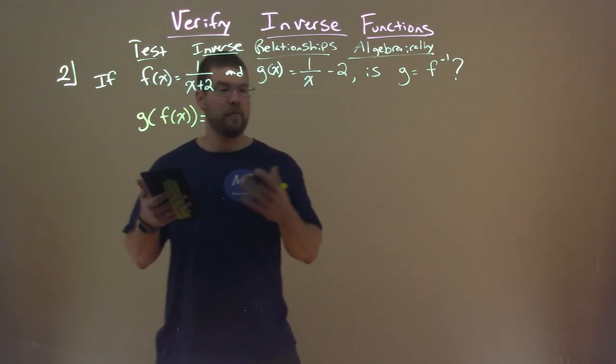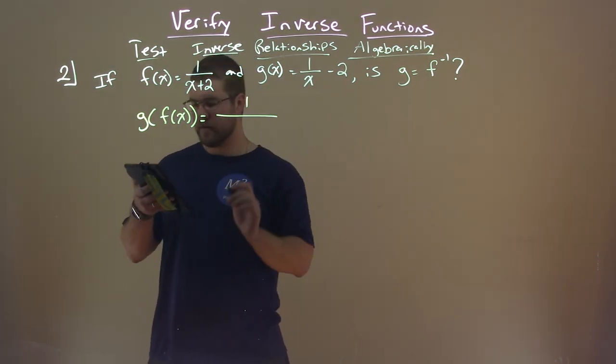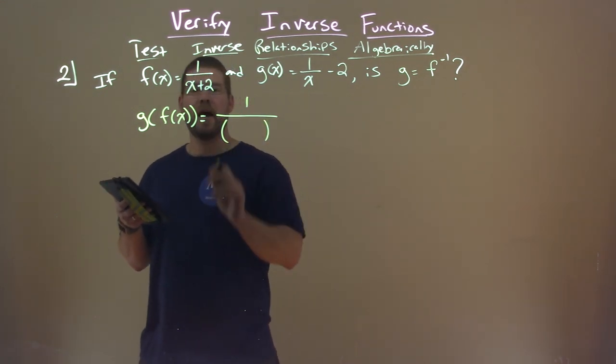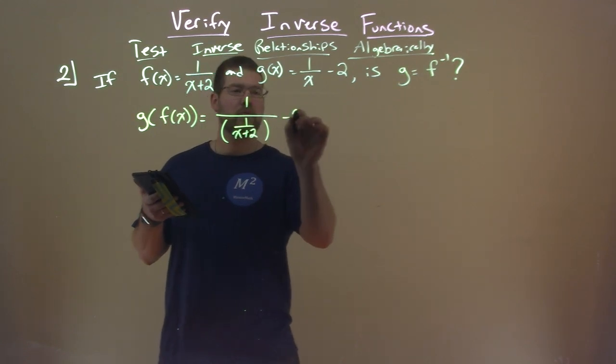Well, g of f of x is our composite function. We take g, which is 1 over x, and where x is, we plug in f of x: 1 over x plus 2, and then we subtract 2 there.